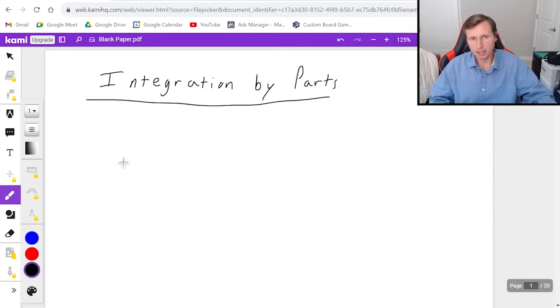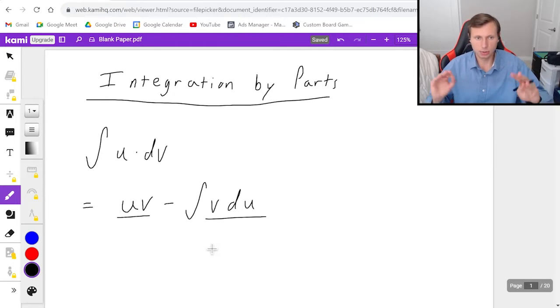So first we have the formula. The formula is you have the integral of u times dv, where u and dv stand for something, and then the integral is going to become uv minus the integral of vdu. And the reason why you would do this is because you probably know this integral now, and this part without the integral is just gone, so it's already solved. I'm not going to be explaining any more about the formula.